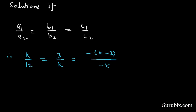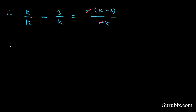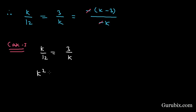The negative signs cancel out. In case one: k/12 = 3/k, which means k² = 36, which means k = ±6.